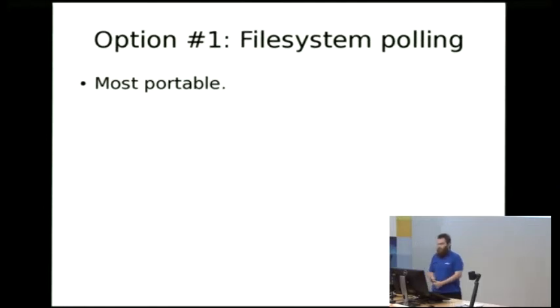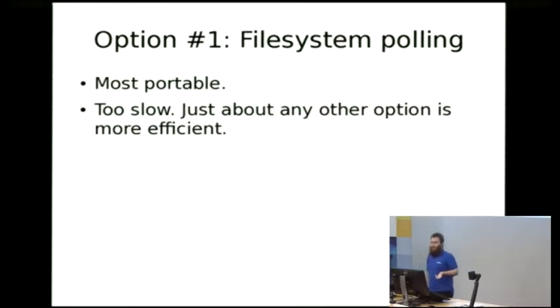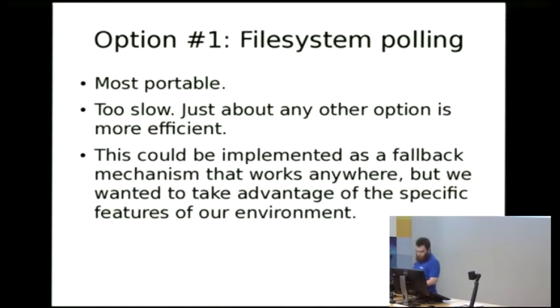So the first option we had to consider for what to hook into that API would be file system polling. That's by far the most portable, but it's quite slow when you're having to poll thousands of files to figure out which ones have changed that's not particularly efficient. It could be implemented as a fallback mechanism, but we wanted to take advantage of the fact that our environment is all Linux, so we didn't implement this, but it probably wouldn't be too hard.